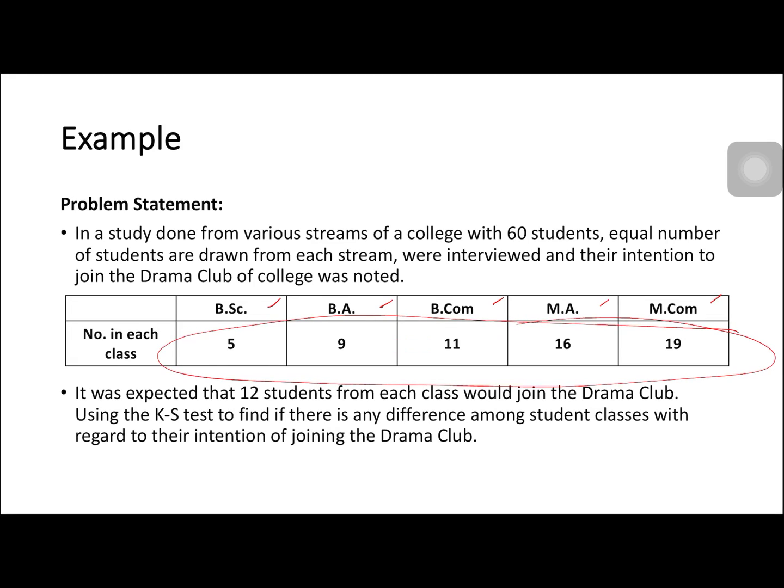This is our observed values. And then for our theoretical, since we have 60 students divided by 5 streams, it gives us 12. So it was expected that 12 students from each class would join the drama club. We use the KS test to find if there is any difference among student classes with regard to their intention of joining the drama club.